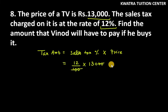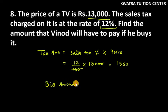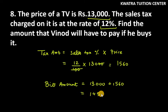20 and 20 will cancel. 12 into 130 will be 1,560. So the tax amount is 1,560, and the total bill amount is 14,560. This means Vinod will have to pay 14,560. So this is the answer for question number 8. Thank you for watching.